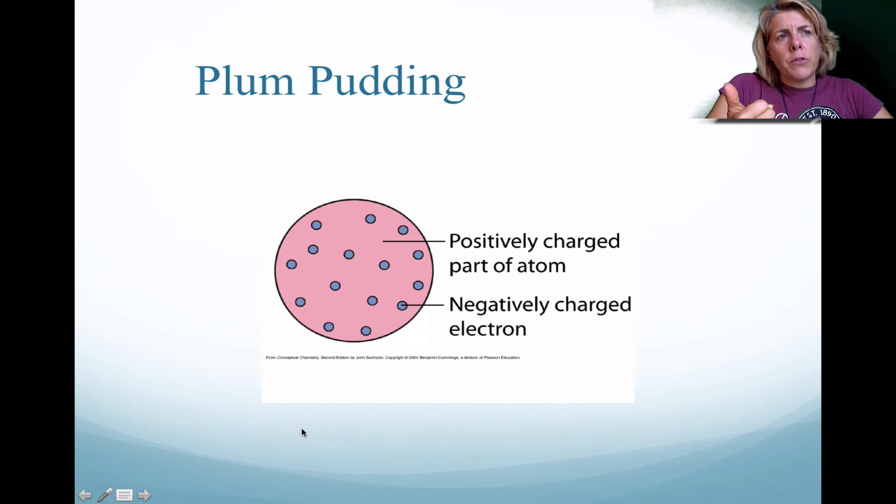So J.J. found the charge to mass ratio. Milliken actually discovered the mass of the electron.